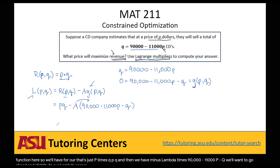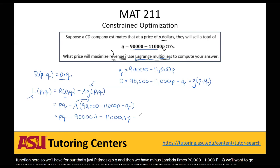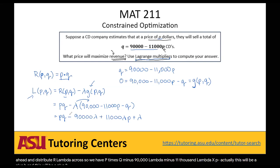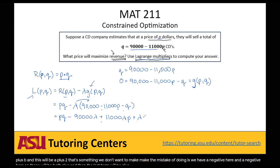We distribute lambda across the constraint term. So we have PQ minus 90,000 lambda plus 11,000 lambda P plus lambda Q. Note that because we have a negative times a negative for those last two terms, they both become positive.